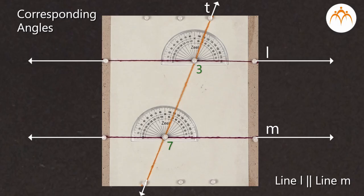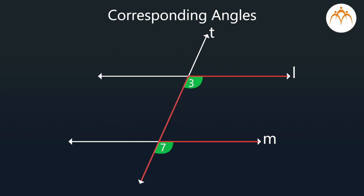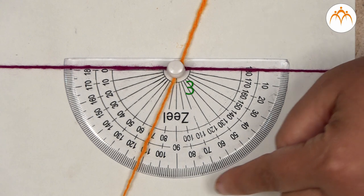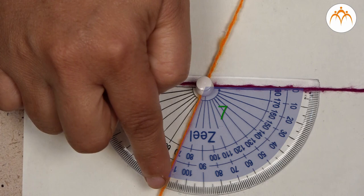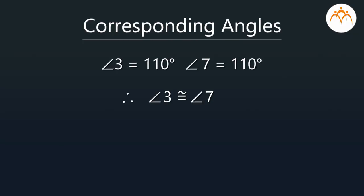Now let us see the third pair of corresponding angles — angle 3 and angle 7. They are formed at these matching corners. If we measure these angles, angle 3 measures 110 degrees and angle 7 measures 110 degrees. So the measure of angle 3 is equal to angle 7, and angle 3 and angle 7 are congruent to each other.